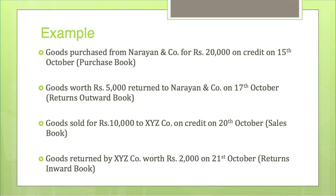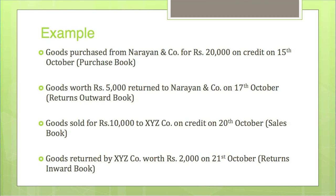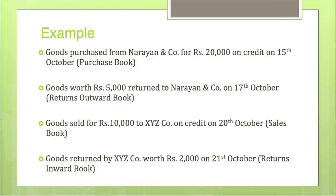Let us take some examples. First: goods purchased from Narayan and Company for Rs. 20,000 on credit on 15th October. This is a credit purchase transaction, so it will be recorded in the Purchase Book. Second: goods worth Rs. 5,000 returned to Narayan and Company on 17th October. This is a return of goods purchased on credit, so it will be recorded in the Returns Outward Book. Third: goods sold for Rs. 10,000 to XYZ Company on credit on 20th October — this will be recorded in the Sales Book.